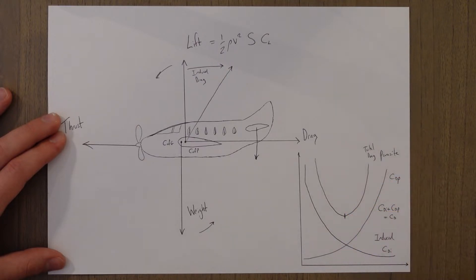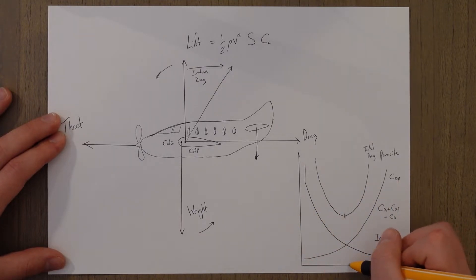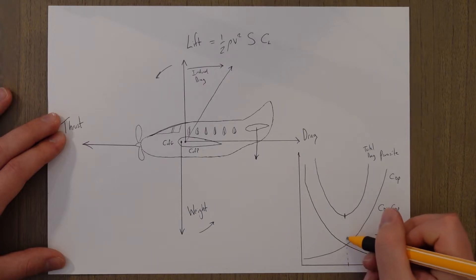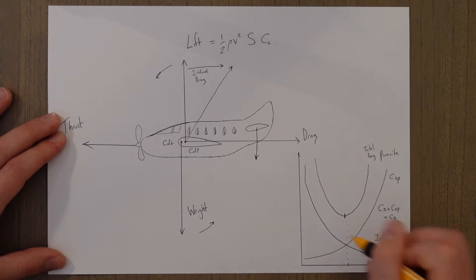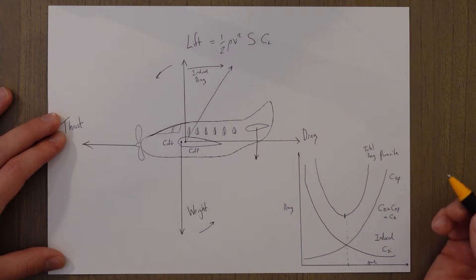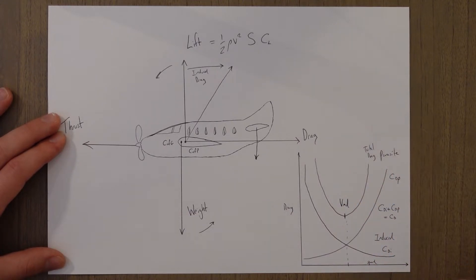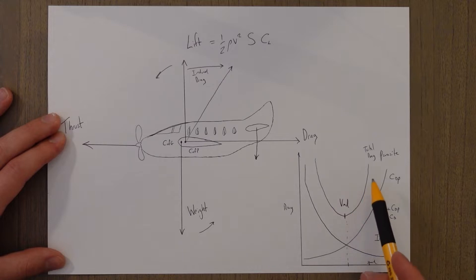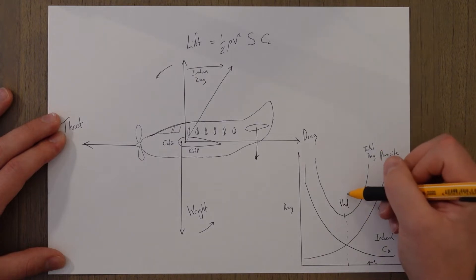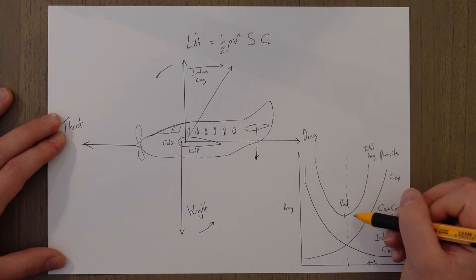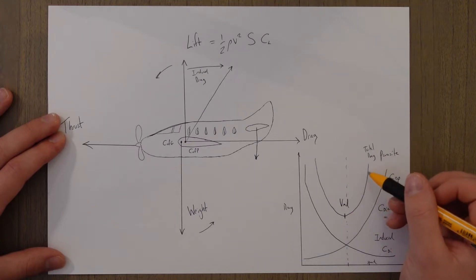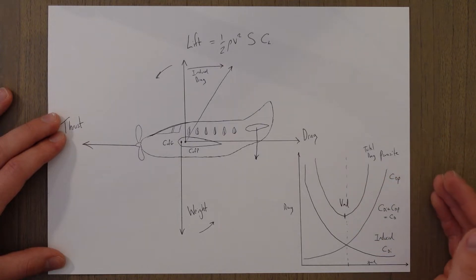On this U-shaped graph there are some pretty interesting things. At the bottom of the U we have the least amount of drag, and this only happens at one specific forward speed. This speed for minimum drag we call VMD — V minimum drag. If we fly faster than this we get more drag, and if we fly slower than this we also get more drag. On the right side of this graph we are in the speed-stable region.